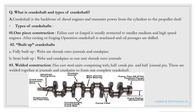The next question is: what is crankshaft and types of crankshaft? Crankshaft is the backbone of diesel engines and transfers power from cylinders to the propeller shaft. Crankshafts are of three types. First, one-piece construction: either cast or forged, usually restricted to smaller, medium, and high-speed engines. After casting or forging, the crankshaft is machined and oil passages are drilled.